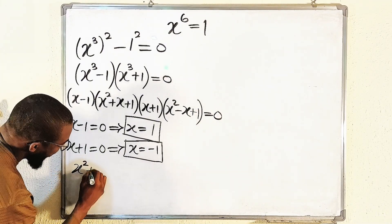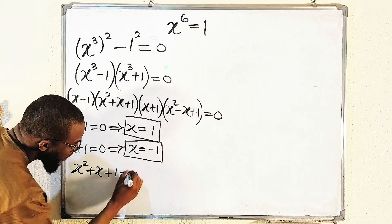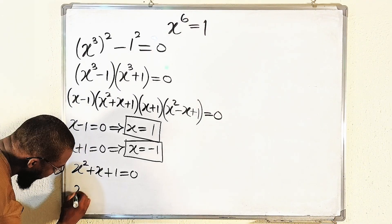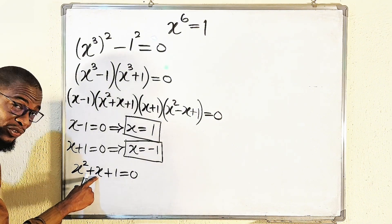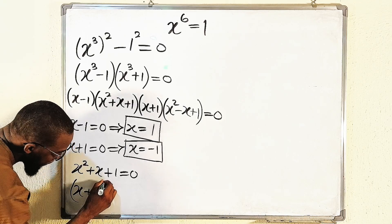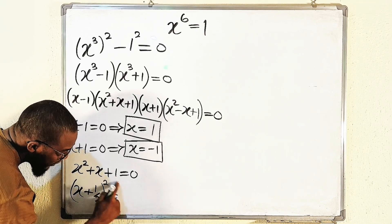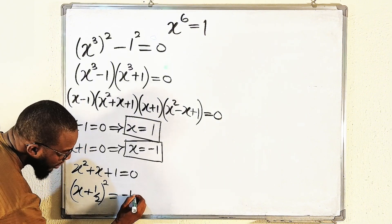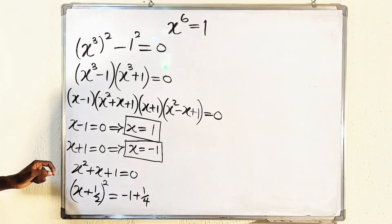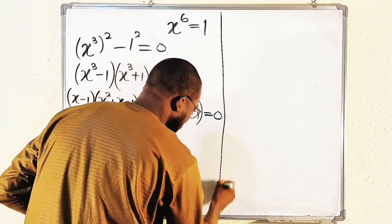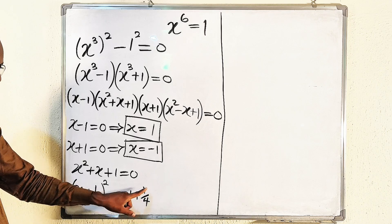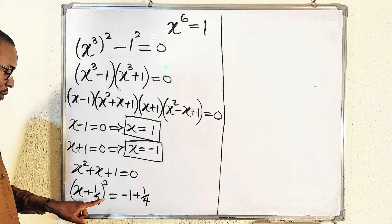For the first quadratic: x² + x + 1 = 0. Solving by completing the square — take half the coefficient of x, which is 1/2, and square it to get 1/4. Moving the constant term across: x² + x + 1/4 = negative 1 plus 1/4, giving negative 3 over 4.